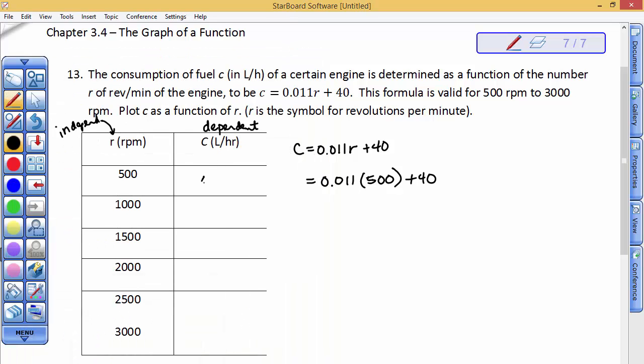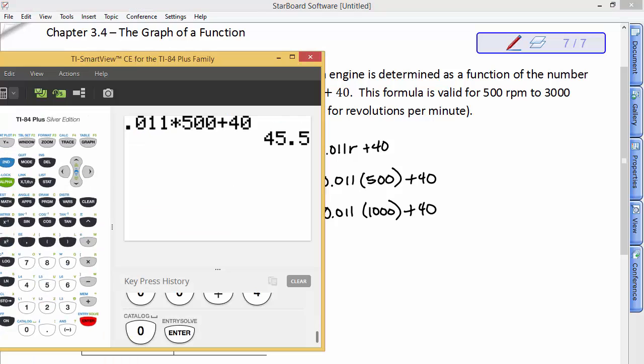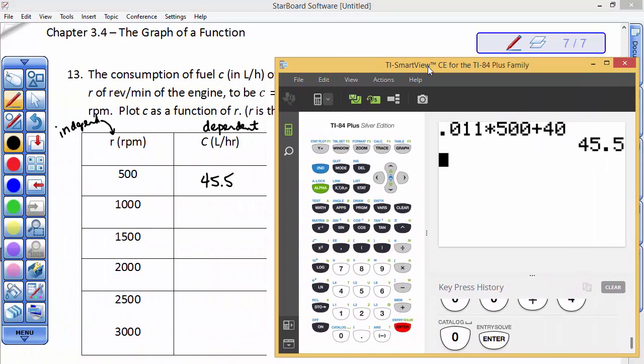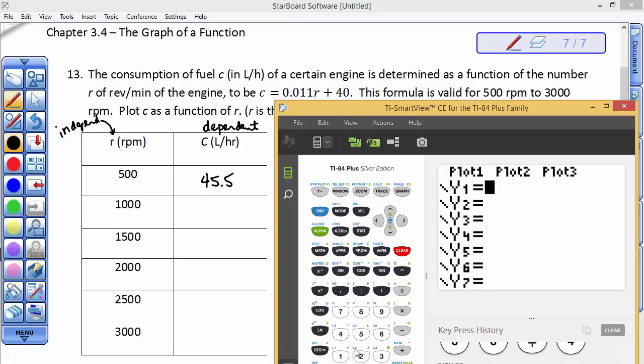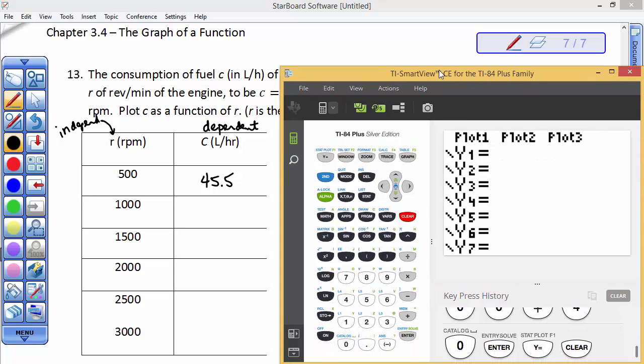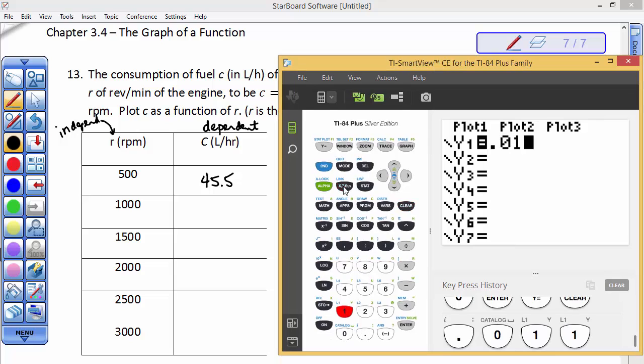We could do that again with 1000, we could take 0.011 times 1000 and add 40 to it and get whatever that answer may be. However, it would be so much easier if we just put the formula into our y equals editor 0.011x, I believe it's plus 40. I've got it covered up with the calculator.